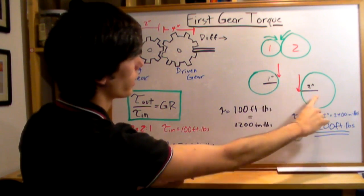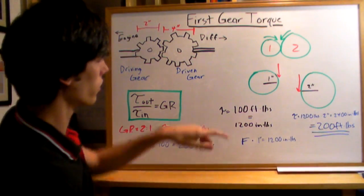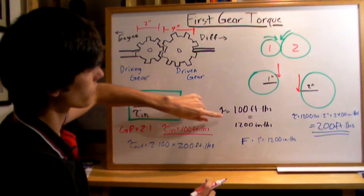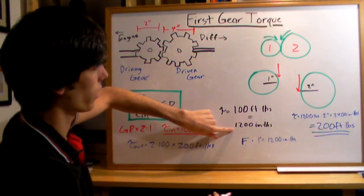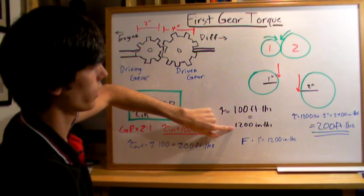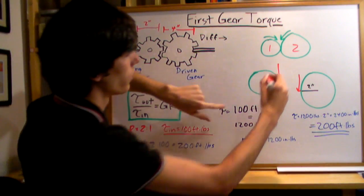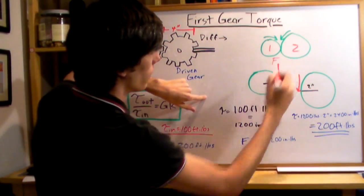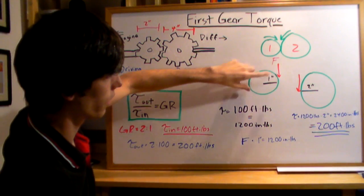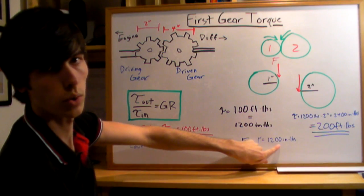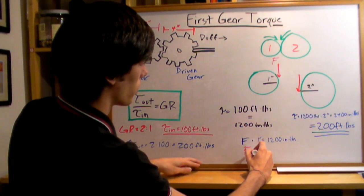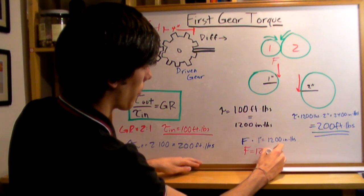This has a radius of 1 inch, this one has a radius of 2 inches. We have our torque input which is 100 foot-pounds and we want to convert that to inch-pounds, so multiply by 12 to get 1200 inch-pounds. Now we want to find out what this force is. The force times the radius of this shaft gives you the torque. We know the torque is 1200 inch-pounds and the radius is 1, so that force equals 1200 pounds.